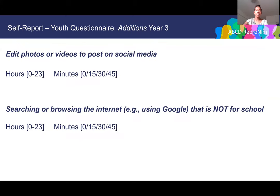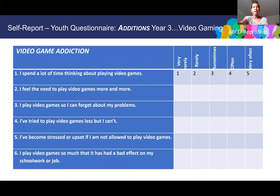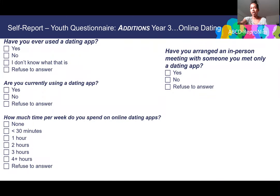Additional year three additions include a question about editing photos or videos to post on social media (drop-down hours and minutes), and a question about searching or browsing the internet using a search engine like Google — specifically not for school — to separate personal from school use, which is especially important given COVID and remote schooling. A video game addiction questionnaire mirroring the social media addiction questionnaire was added, along with online dating questions: have you ever used a dating app, are you currently using one, how much time per week do you spend on dating apps, and have you ever arranged an in-person meeting with someone you met only on a dating app.